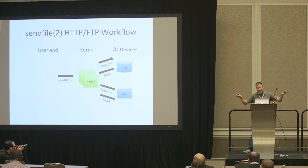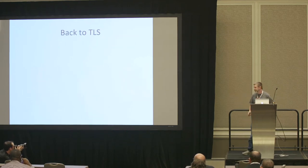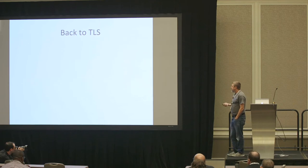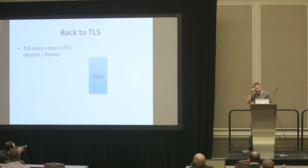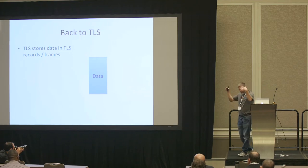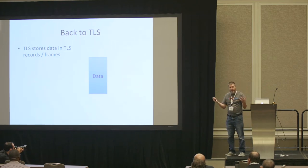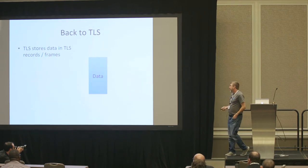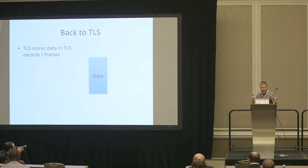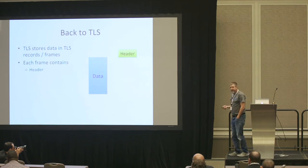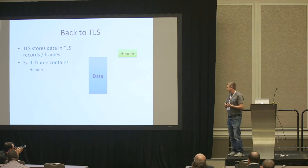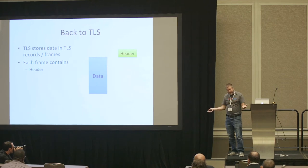Now let's look at what happens when we use TLS. One thing to understand about TLS is that it's an application-layer protocol above TCP with its own framing structure. When passing data, it packages data into large frames. Those frames have a header — a small header that says how much data the record contains and what type of data it is — mostly application data, but also control messages for key negotiation and so forth.